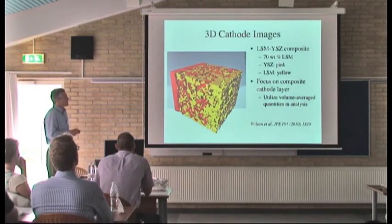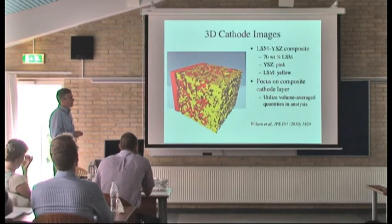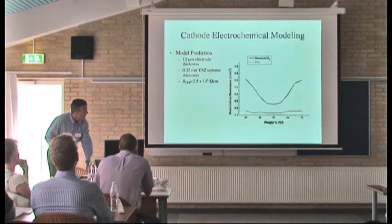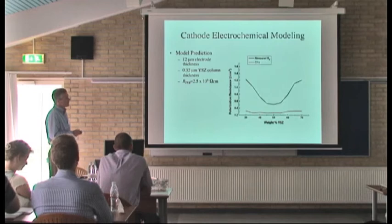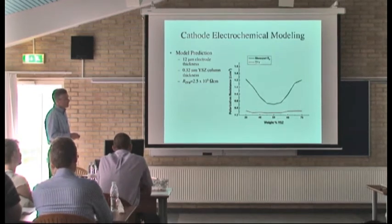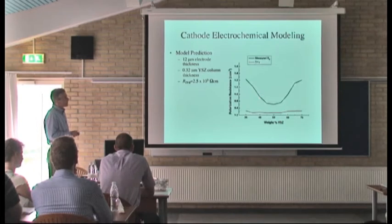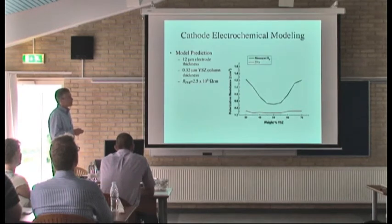First, we looked at the effects of composition in LSM-YSZ composite cathodes — similar to what James had shown earlier, focused on the average structure in the composite active layer. We were actually able to come up with reasonably good predictions that match somewhat with the measured polarization resistance of these LSM-YSZ cathodes as a function of composition, going from about 30% YSZ up to about 70% YSZ. We used a Tanner-Fung-Verkar model to model the composite electrodes — a very simple structural model into which we entered the average microstructural information from the FIB-SEM dataset.